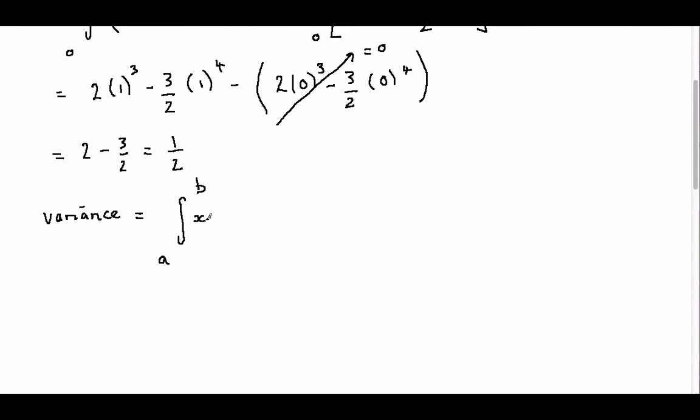X squared this time times P of X, take away the mean squared.